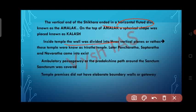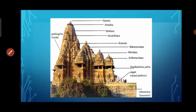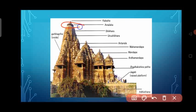Inside the temple, the wall was divided into three vertical planes or Rathas; these temples were known as Triratha temples. Later, Pancharatha, Saptaratha and Navaratha came into existence. The ambulatory passageway or Pradikshana path around the Sanctum Sanctorum was covered, and the temple premises did not have an elaborate boundary wall or gateway.